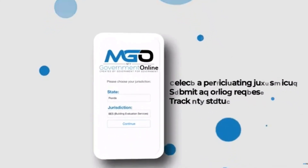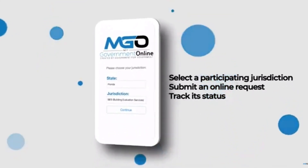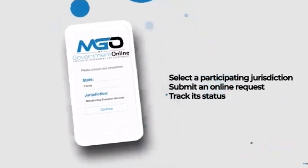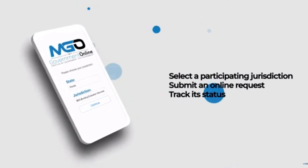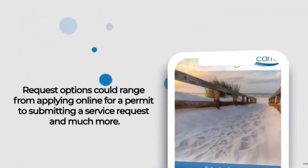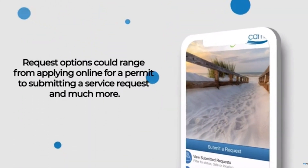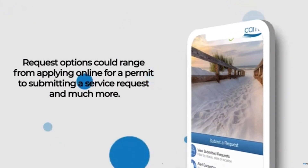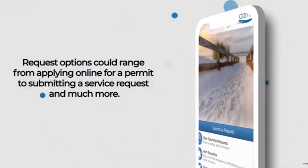MGO Connect is a mobile app for any phone or tablet that allows you to select a participating jurisdiction, submit an online request, and track its status. Request options can range from applying online for a permit to submitting a service request and much more.